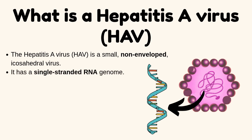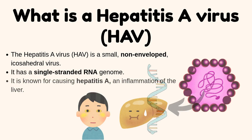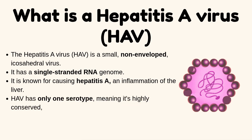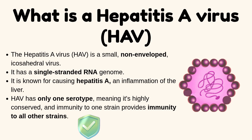It has a single-stranded RNA genome. It is known for causing Hepatitis A, an inflammation of the liver. HAV has only one serotype, meaning it is highly conserved. Immunity to one strain provides immunity to all other strains.